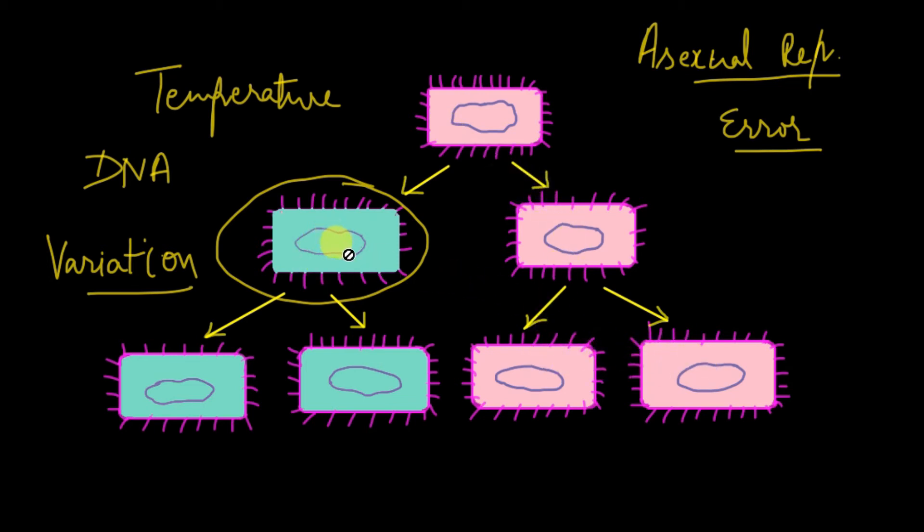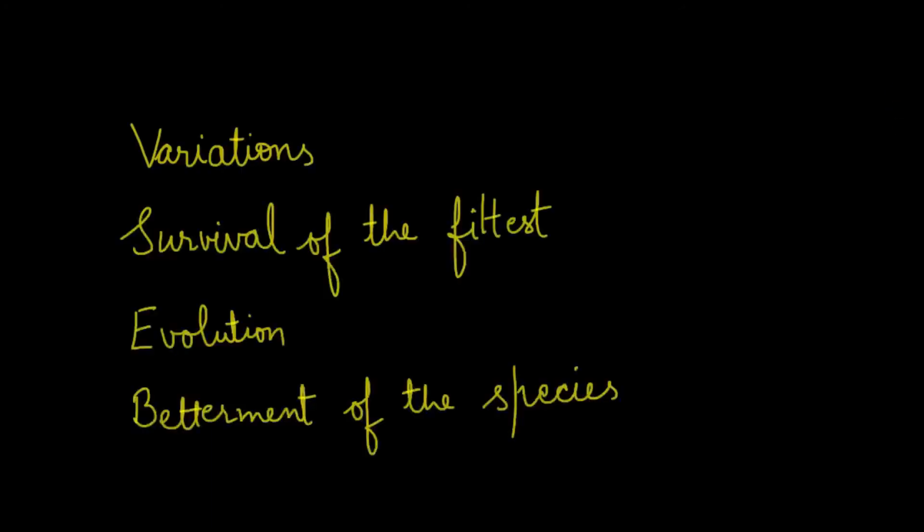The new bacteria, because of the variations, will proliferate and replace the population. It means in asexual reproduction, DNA errors and variations are slow, but in sexual reproduction, variations can be passed from one generation to the next generation. This ensures that the fittest organism survives and leads to species evolution and the whole species betterment.